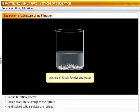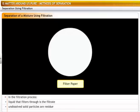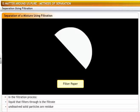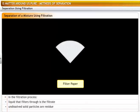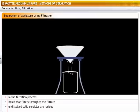Imagine you want to separate a mixture of chalk powder and water. For separating this mixture, first take a round strip of filter paper. Fold it into half. Then into a quarter. Then open it in the form of a cone and place it in a funnel.